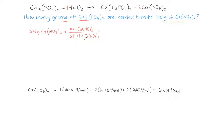We're left with moles of calcium nitrate, so we're ready to use our mole ratio from the balanced equation. We place 2 moles of calcium nitrate in the denominator so the moles cancel, and according to the equation those 2 moles of calcium nitrate are produced from 1 mole of calcium phosphate. Our moles of calcium nitrate cancel.